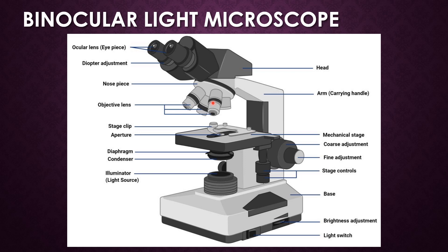The nose piece is the portion of the body that holds the objective lens. Two types of adjustment are present: the coarse adjustment, which is used to make relatively wide focusing adjustments to the microscope, and the fine adjustment, which is used to make relatively small adjustments to the microscope according to the person's eye power.